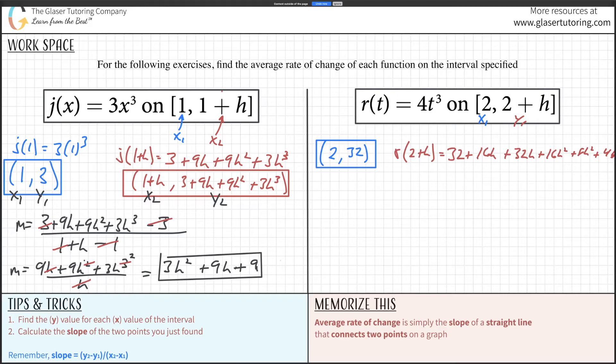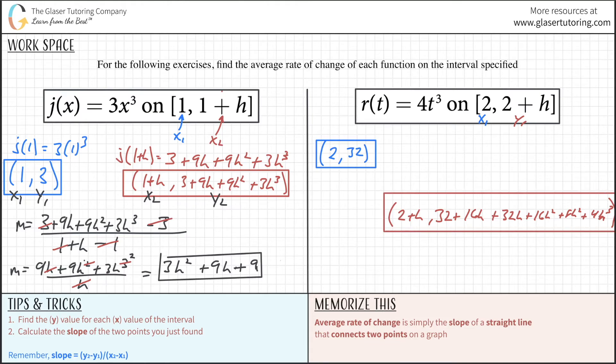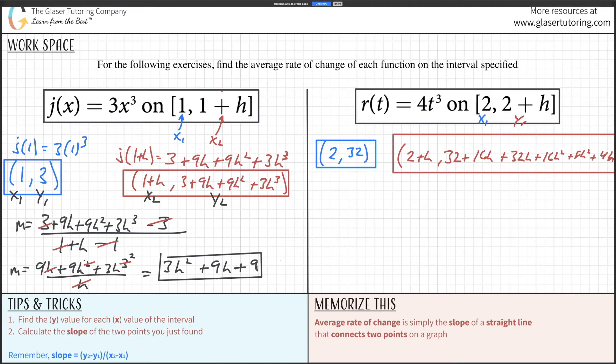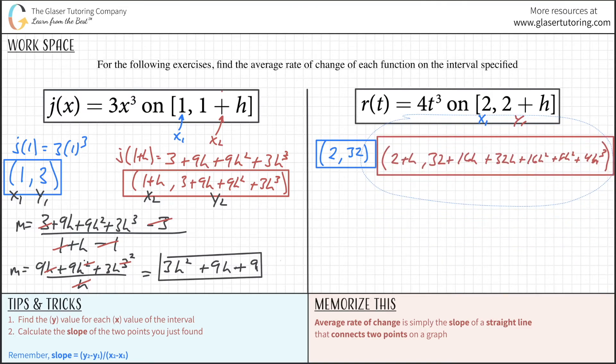Let's erase this work and move it up. The second coordinate is (2 plus h, 32 plus 48h plus 24h squared plus 4h cubed). Let's call this x1, y1, x2, and y2. Now we just got to go to work.